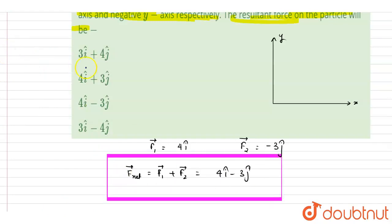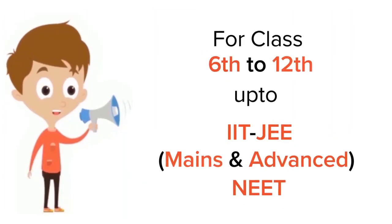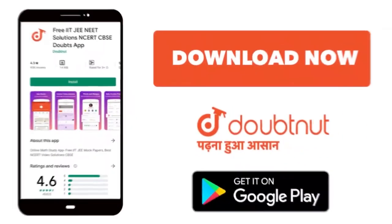So if you see, the correct option here is C. Thank you. For class 6th to 12th, up to IIT-JEE and NEET level. Trusted by more than 5 crore students. Download Doubtnet app today.